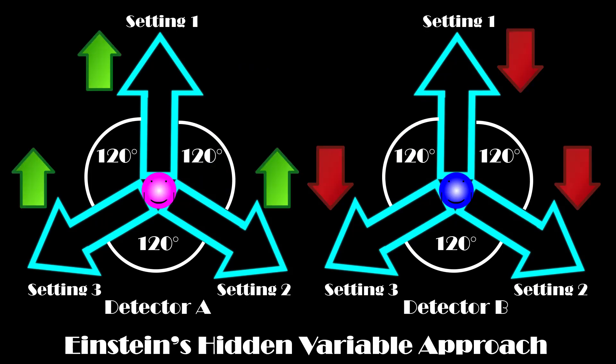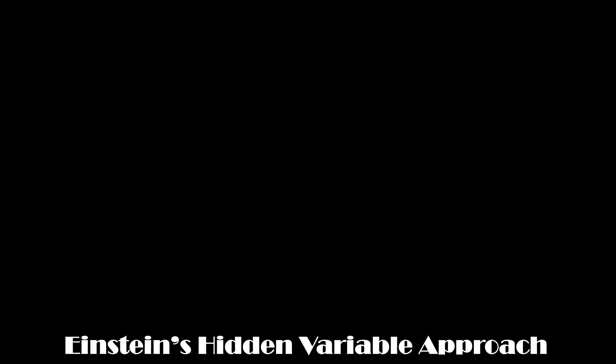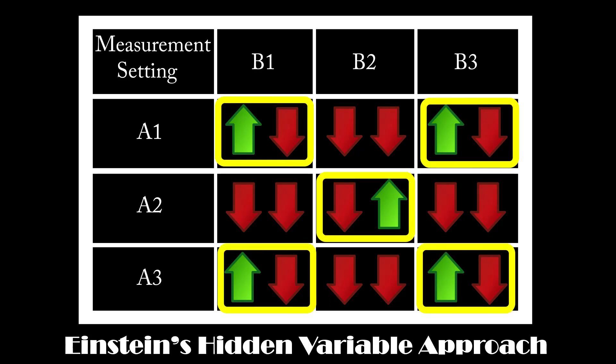One plan is Alice giving measurement up in all settings and Bob giving measurement down in all settings. Another would be the spins alternating, such that Alice spins up in setting 1, down in setting 2, and so on, with Bob doing the opposite. We can keep track of the second plan with a table. In plan 1, the detectors always measure opposite spins. In plan 2, the detectors read different spins 5 out of 9 times. Therefore, if Einstein is correct, we expect to see different spins at least 5 out of 9 times.